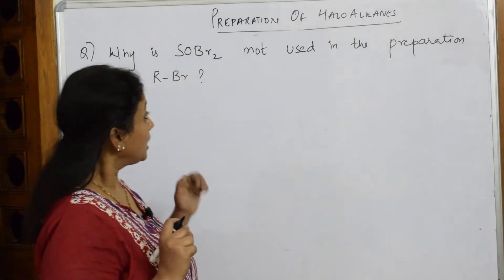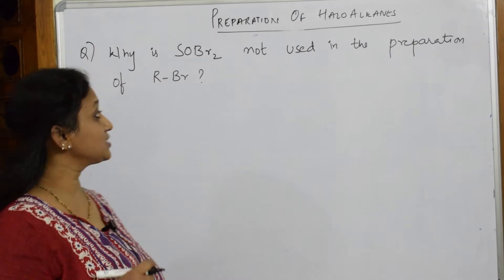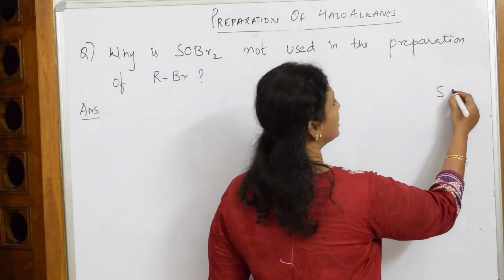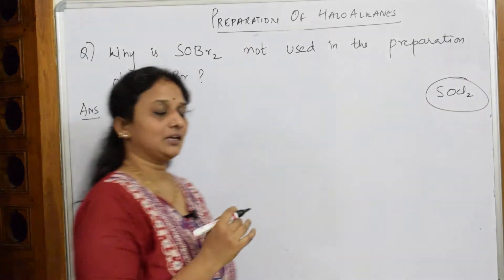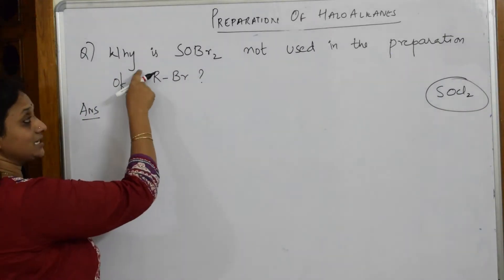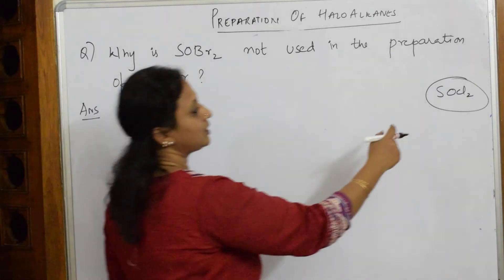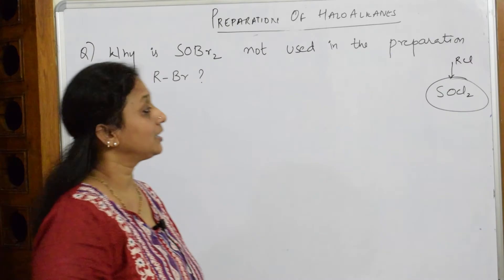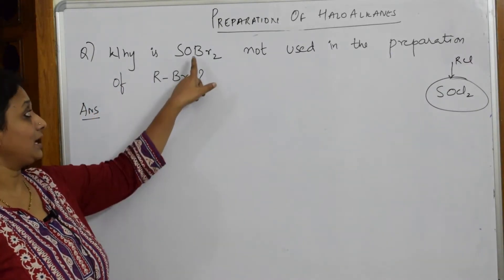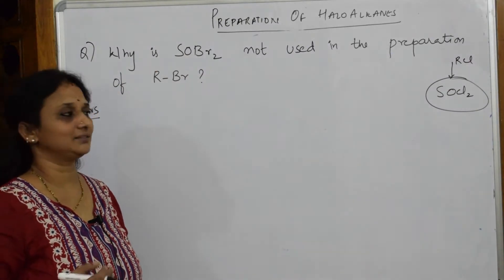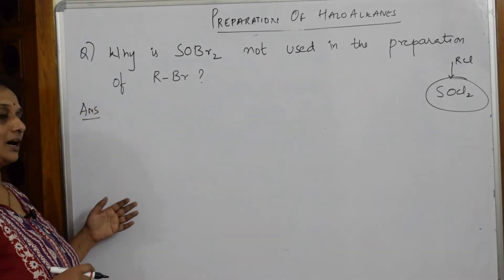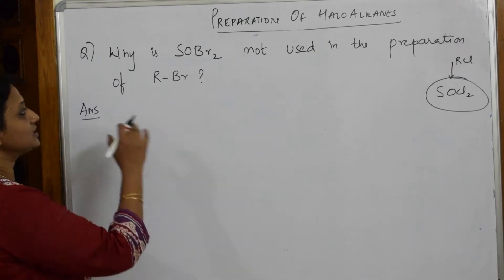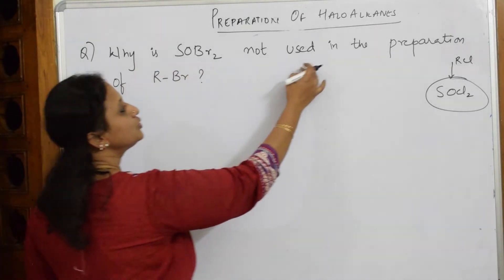Now the question arises: I have to prepare a haloalkane using SOBr2. Earlier I used thionyl chloride. The logic is simple — if I have to prepare RCl I use SOCl2, and if I have to prepare RBr I have to use SOBr2. Similarly, if I have to prepare RI I would use SOI2.